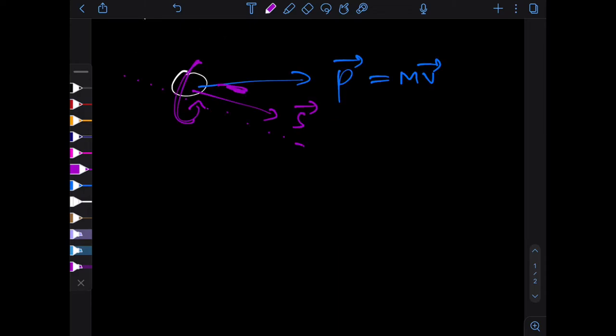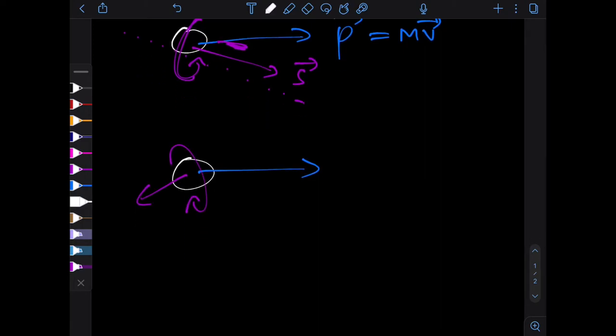Obviously we can have the momentum and spin be oriented in a whole bunch of ways, so we can have the momentum and spin pointing like that, so it's spinning this way. Or we could have the momentum and spin being perfectly aligned, which looks pretty satisfying.